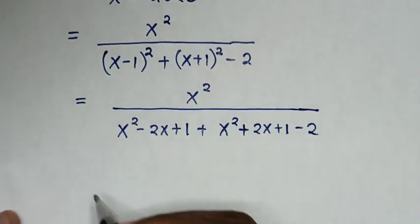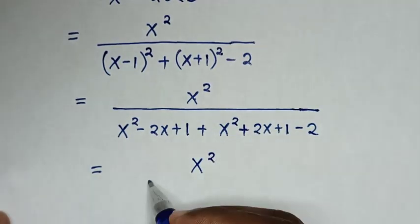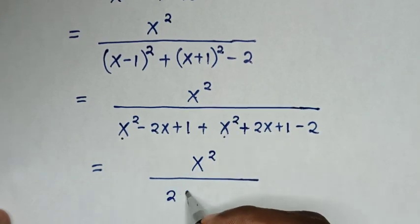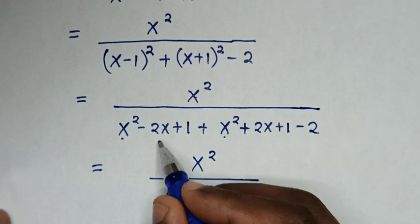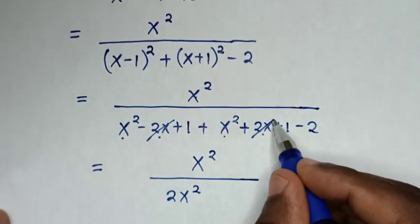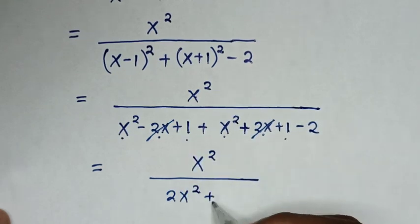Then in the next step, it will be equal to x square over x square plus x square is 2x square. Negative 2x plus 2x is 0, so this and this will cancel. Then 1 plus 1 is 2, so plus 2, then minus 2.